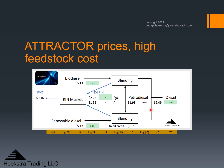Checking profit margins: the petrodiesel supplier gets $2.09 for the product, which costs $1.93 to produce — a $0.16 apparent profit — but that goes to the RVO, so the marginal petrodiesel supplier breaks even. The renewable diesel supplier gets $2.09 for the fuel plus the fixed credit of $0.76, totaling $2.85, plus the RIN value of $2.28, equaling the cost of $5.13. So the renewable diesel supplier breaks even, and same for the biodiesel supplier.